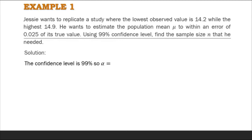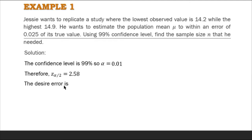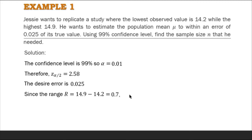The confidence level is 99 percent, so alpha is 0.01. Looking up the z-table for z sub alpha over 2, we get 2.58. The desired error E is 0.025. Since the range R is between the lowest value 14.2 and highest value 14.9, the difference is 14.9 minus 14.2, which equals 0.7. Dividing by 4 to estimate sigma: 0.7 divided by 4 gives sigma equals 0.2.